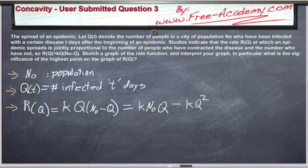Then we have an equation R(Q), which is the rate that the infection spreads. How fast does the infection spread at this particular time? It's equal to k, which is a constant, times Q times the population of the city minus the number of people infected. So we're going to want to sketch a graph of the rate function and interpret the graph. So let's do that.